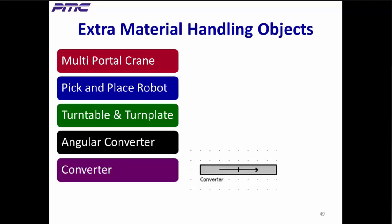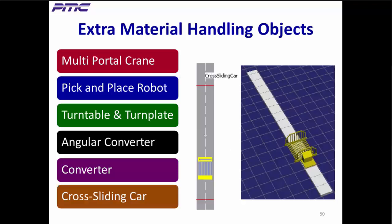The converter is yet another unique object. The part either passes straight through in the conveyor direction or is, for example, lifted onto a laterally moving transport level, then conveyed laterally to the left or right. The cross sliding car is mainly used for moving parts from one conveyor to another. Parts enter from left or right, then move across an aisle, and then exit on the left or right.